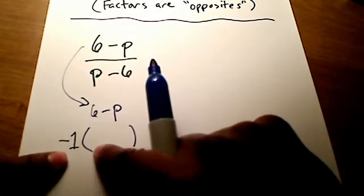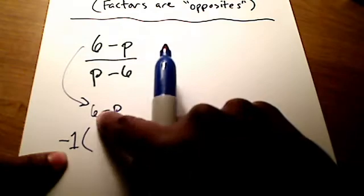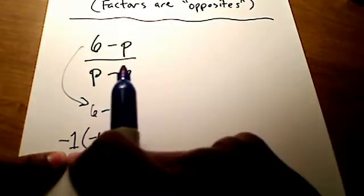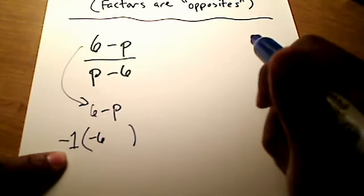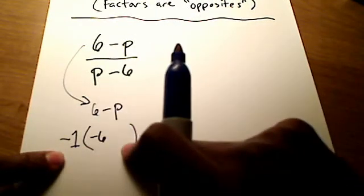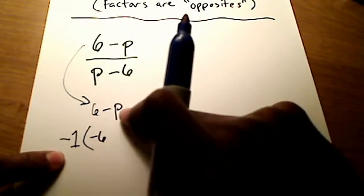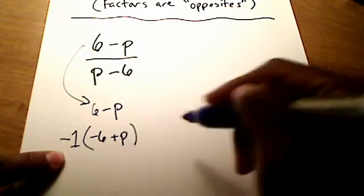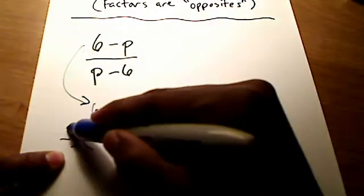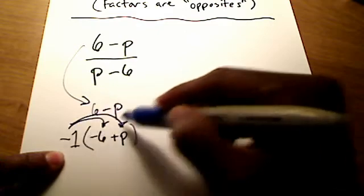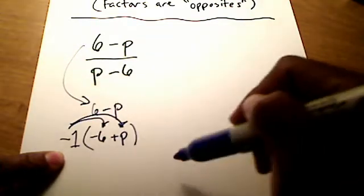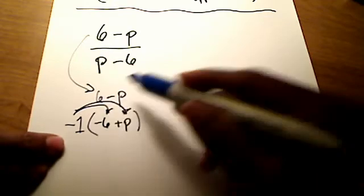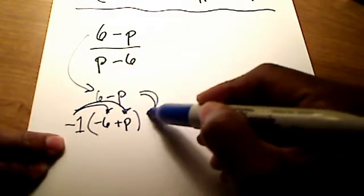here's what we're asking ourselves. Negative 1 times what would get us back to a positive 6? That would be a negative 6. Negative 1 times negative 6 goes back to a positive 6. And negative 1 times what would get us back to that negative p? Times a positive p. And just to double check, pop that negative 1 back in, distribute it back in, and you'll see that it gets us back to 6 minus p.